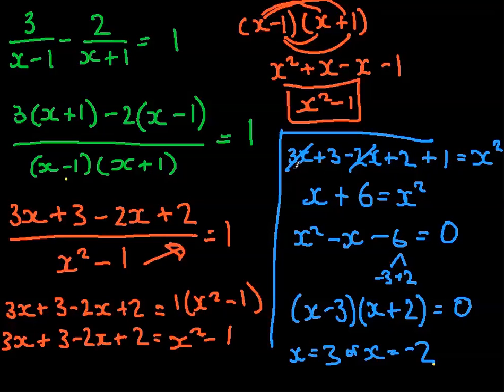And we just did 3x minus 2x, which got us the x. We did the plus 3, plus 2, plus 1, which got us the plus 6 equals x squared. And then we simply moved all of this onto this side to get a quadratic expression, which is x squared minus x minus 6 equals 0. Once we did that, we found the factors of minus 6 that added up together to get minus 1, and we put them into the brackets, and then we got our answer.